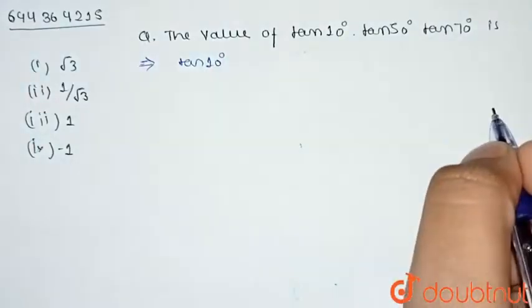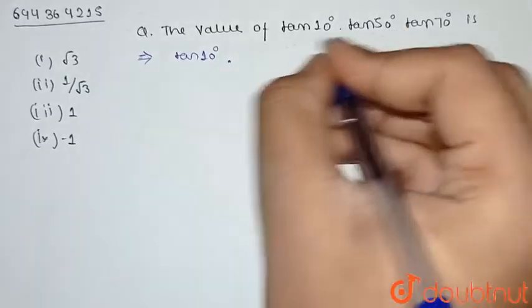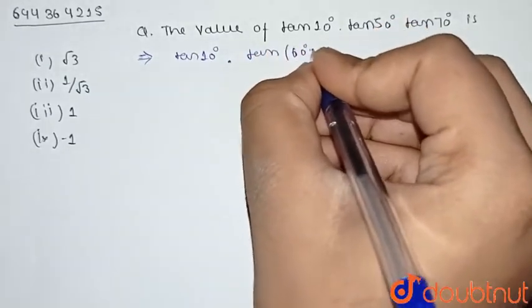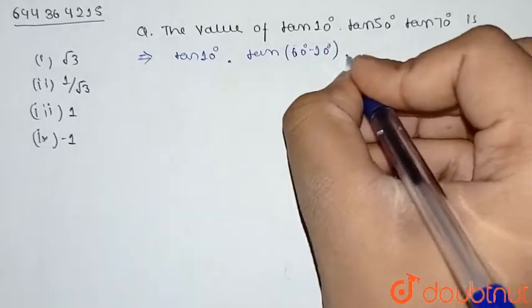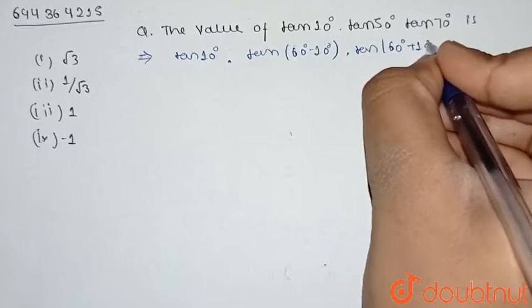tan10° into, we can write tan50° as tan(60° - 10°) and tan70° can be written as tan(60° + 10°).